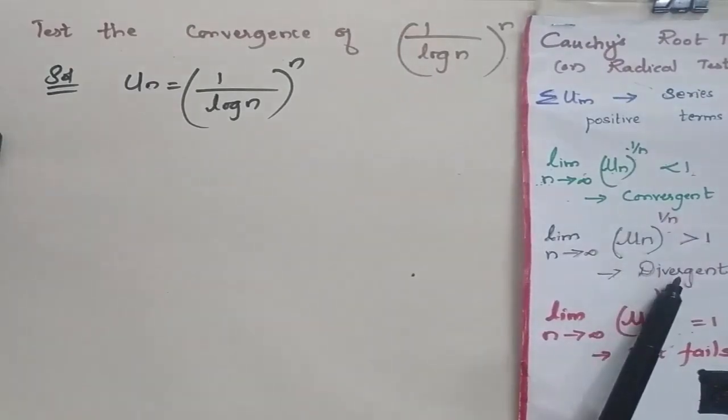When it is greater than 1, it is divergent. And when it is equal to 1, the test fails.